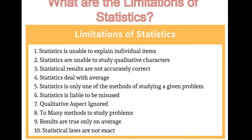The fourth limitation: statistics deal with averages that are obtained from different individual items. The laws of statistics are true only on average. The fifth limitation is that statistics is only one of the methods of studying a given problem. The best solution under all conditions of the given problem is not always provided by the statistical method. Statistics cannot be of much help in studying problems like a country's culture, religion and philosophy unless supplemented by other evidence.